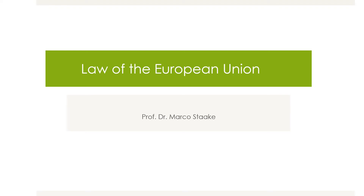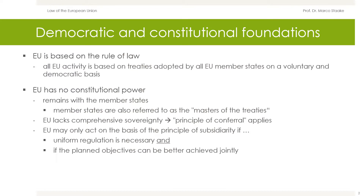Welcome back to the lecture Introduction to Law. In this unit you will hear something about the law of the European Union. The European Union, or short EU, is an association of 27 European countries. It is not to be confused with the continent Europe. The European Union is based on the rule of law, meaning that all EU activity is based on treaties adopted by all Union member states on a voluntary and democratic basis.